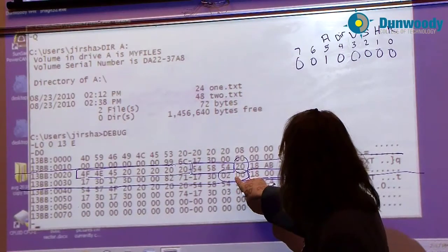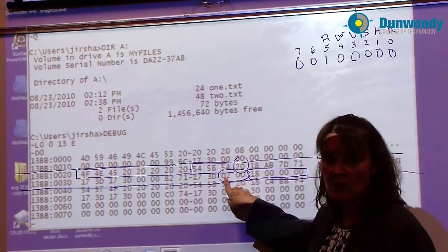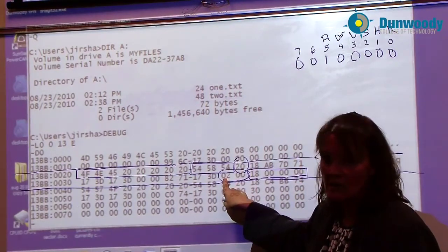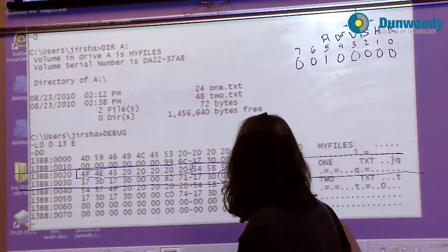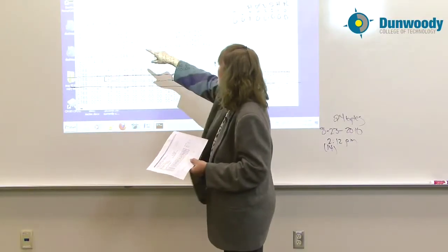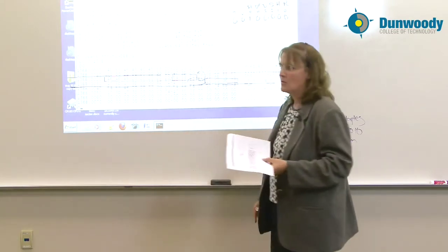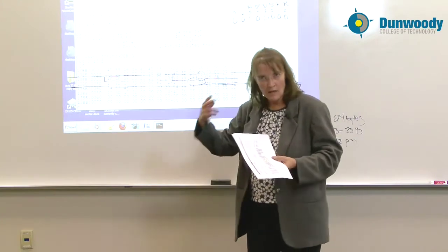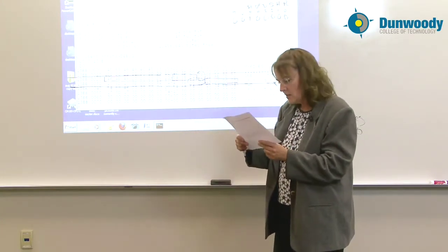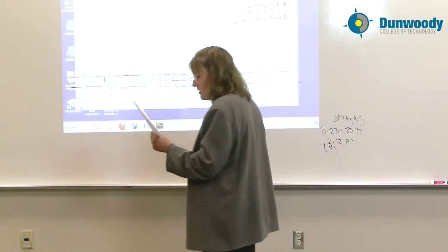And the first part of the file is going to be stored in cluster number 0002, which is cluster number 2. That would be the first data cluster. Clustering starts at number 2. And then the date and the time. We looked at the modified date and the modified time. There's also stored in here the date created and the time created, and a few flags that are used by NT.